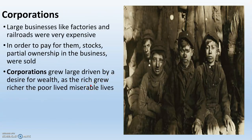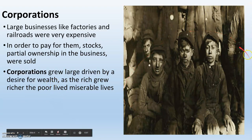The first corporations are formed. A corporation is a really complicated business that generally sells stocks. Businesses like factories and railroads are very expensive, so in order to pay for them they have to sell stocks — pieces of paper that say you partially own a business. Anybody can buy stocks; you can go buy stock right now in Google or Apple or whatever you want. But corporations grew really, really large driven by this desire for wealth, and the rich grow richer while the poor are getting poorer and begin living miserable lives.